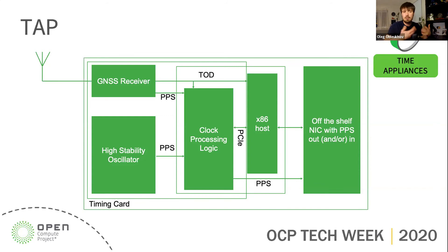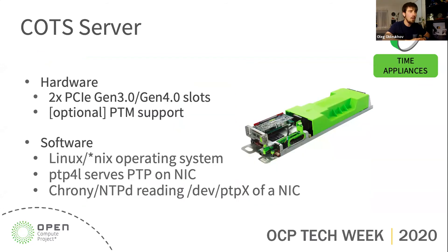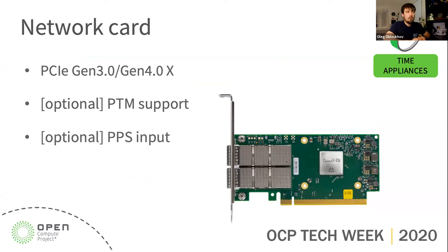The Time Card has a GNSS receiver, a high-quality oscillator — an atomic clock in our case — and a so-called bridge which links everything and exposes it via PCIe. We plugged everything into OCP hardware. The network card we used is a Mellanox card, which may have PTM support that greatly improves precision, and a PPS input which we used to validate it.